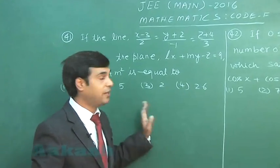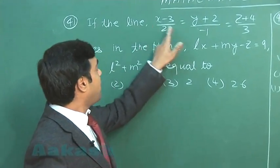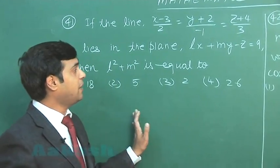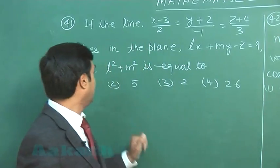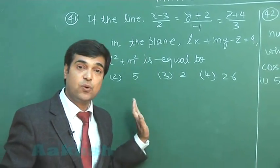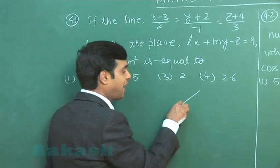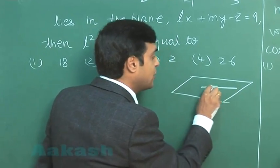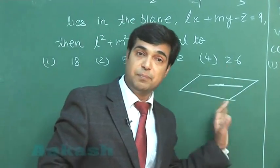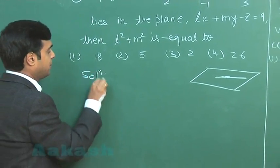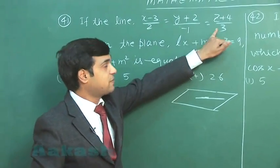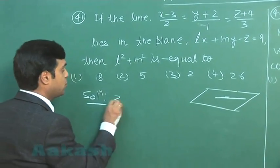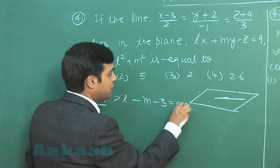Let us take the 41st question from 3D. If the line (x minus 3)/2 equals (y plus 2)/(minus 1) equals (z plus 4)/3 lies in the plane lx plus my minus z equals 9, then l² plus m² is equal to — four options are given. Since the line is lying in the plane, the dot product of direction ratios of the line and the normal is zero. From the line, direction ratios are 2, minus 1, and 3; for the normal of the plane it is l, m, minus 1. So we get 2l minus m minus 3 equals 0 as equation 1.